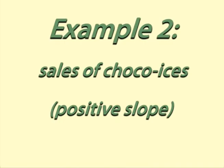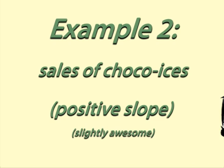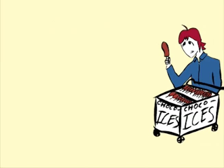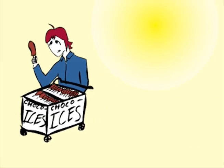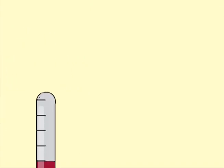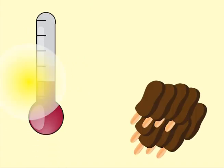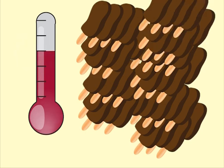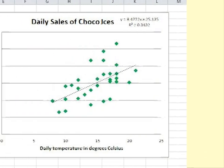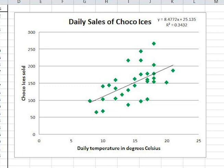Here is another example explained briefly. Helen's brother Luke sells choco ices. They are particularly delicious and refreshing on hot days. Helen and Luke suspect that the sales of choco ices increase as the temperature increases. They ask us to analyse the relationship between temperatures for the 30 days and the sales of choco ices.